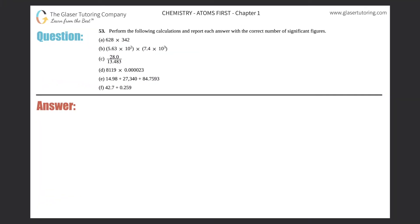Number 53: perform the following calculations and report each answer with the correct number of significant figures. I see that I have a through f, so let's list them out: a, b, c, d, e, and f. We're doing something new here — multiplication, division, addition, and subtraction with sig figs.